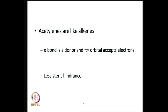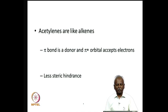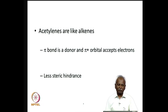There are two pi bonds in acetylene, and each pi bond is associated with a pi star or antibonding orbital. The situation is very similar to alkenes in that the pi bond is able to donate a pair of electrons to the metal complex, and the pi star orbital of an acetylene can also accept a pair of electrons.